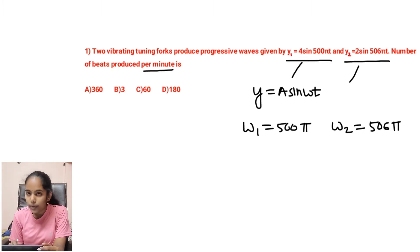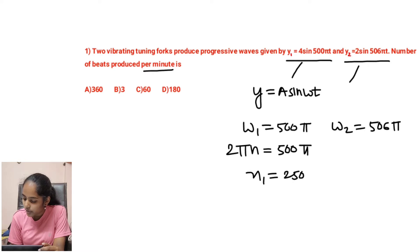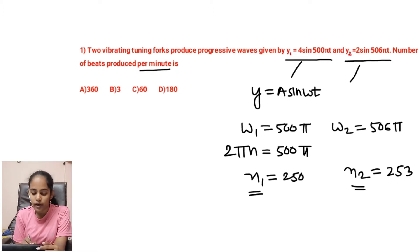We know that ω = 2πn, right? So n₁ becomes 500 by 2, that is 250, and n₂ becomes 506 by 2, that is 253. Now we know the values of n₁ and n₂. So if we find the beat frequency, n₂ minus n₁ will become 253 minus 250, that is 3.